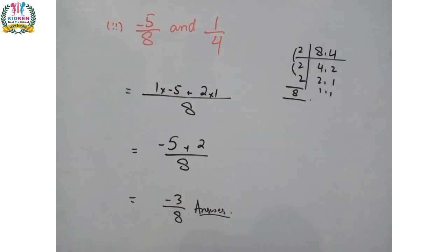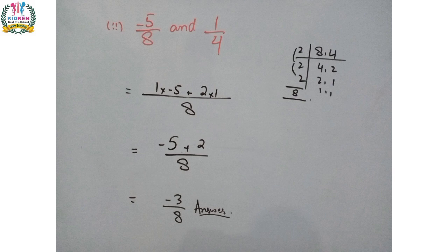The next part is minus 5 upon 8 and 1 upon 4. Again we find the LCM of 8 and 4, which is 8. We write 8 as the denominator. For 8 divided by 8, we get 1, multiplied by the numerator 5 gives minus 5. Then 8 divided by 4 gives 2, multiplied by numerator 1 gives 2. So minus 5 plus 2 gives minus 3 upon 8. This is the final solution.